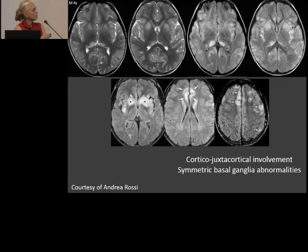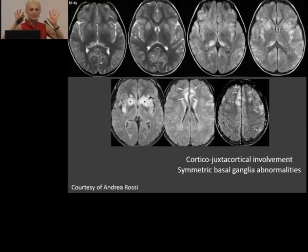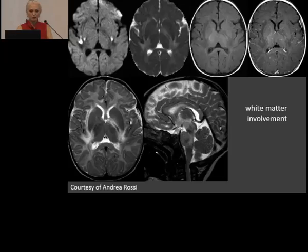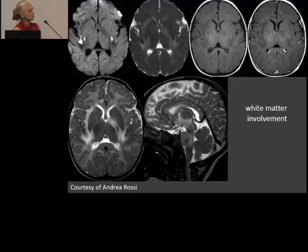Typical locations for ADEM include bilateral thalamic region, basal ganglia, and cortical lesions. Symmetric basal ganglia involvement is very suggestive of ADEM. This is a lesion with white matter involvement and restricted diffusion — very dark on DWI — nicely shown.